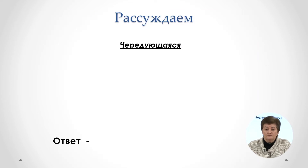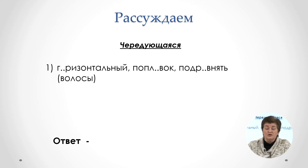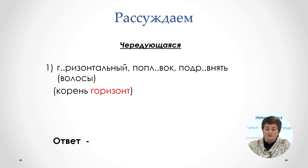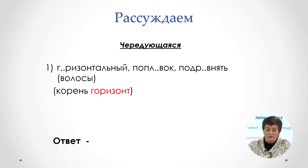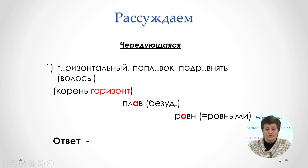Рассуждаем так: выделяем слово, на которое необходимо обратить внимание. Какую гласную нам нужно найти? Чередующуюся. Читая слова каждого ряда, соотносим их с таблицей и обнаруживаем, что в первом ряду есть слово, которое не позволяет нам выбрать этот ответ. Мы вспоминаем первое занятие: важно выделить корень слова. В слове «горизонтальный» корень не «гор», а «горизонт». «Поплавок» и «подровнять» включают чередующийся корень, но первый ряд ответом быть не может.